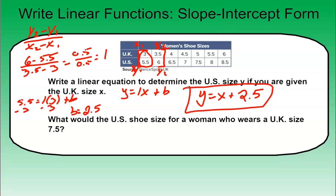Now the second question, we're going to use that equation to solve. Now it says, what would the U.S. shoe size be for a woman who wears a U.K. size of 7.5? Now the U.S. size is your y. So we need to find out what y is when x is 7.5, because x is the U.K. size. So I'm going to have 7.5 plus the 2.5.